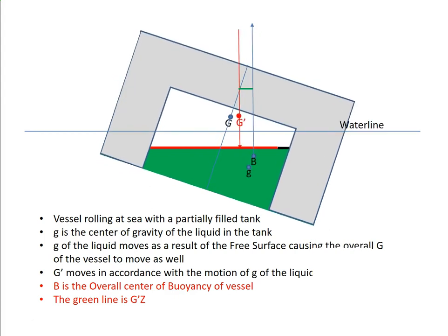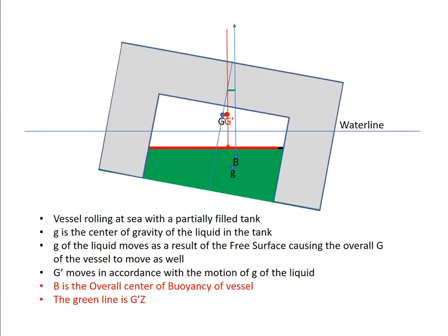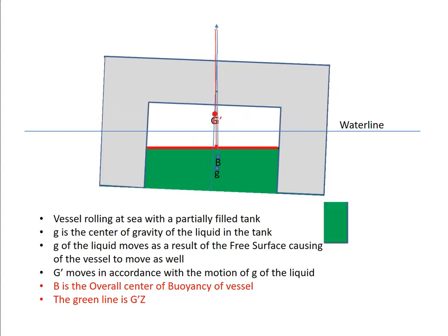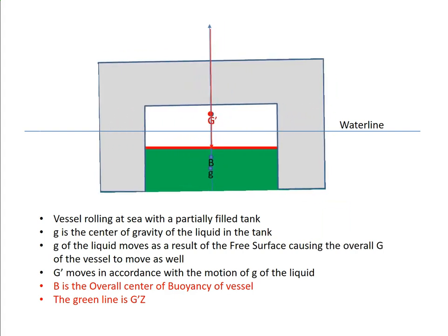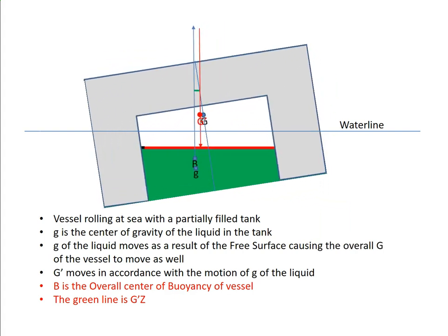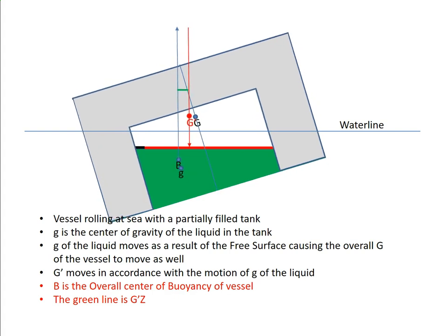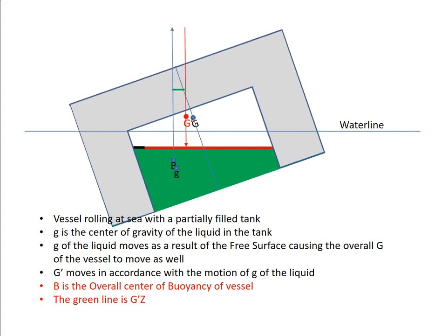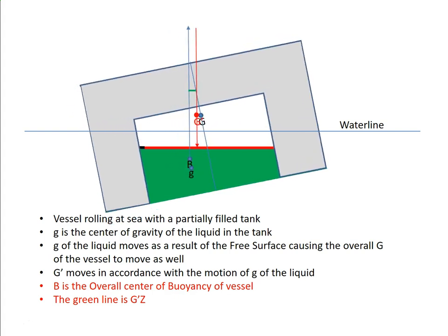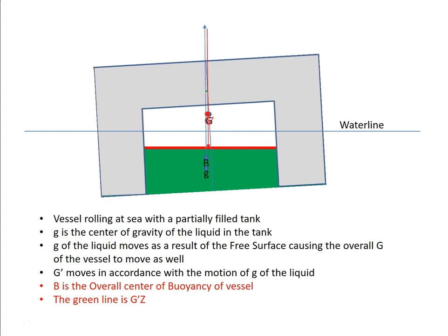You can see gz increasing as the vessel's rolling and now decreasing as the vessel's coming back to upright. Now it's rolling to the other side and you can see gz increasing again. The vessel comes back.